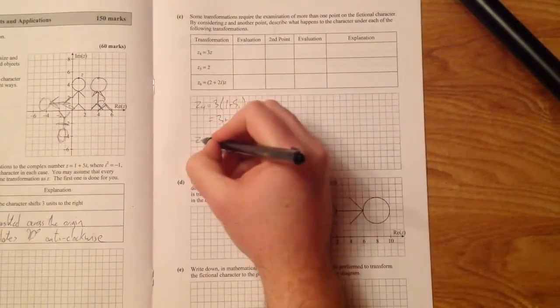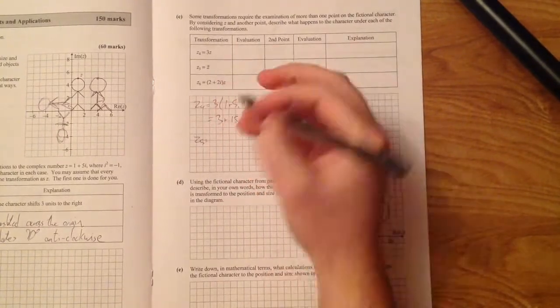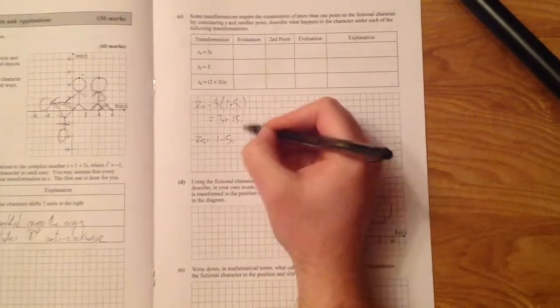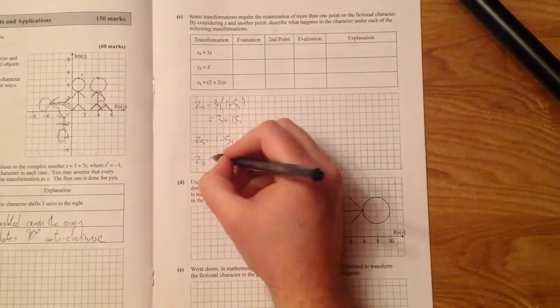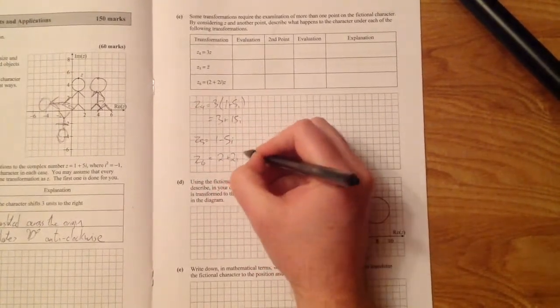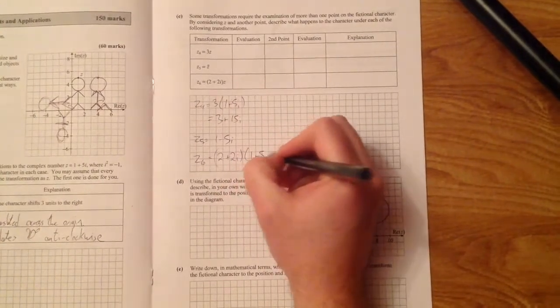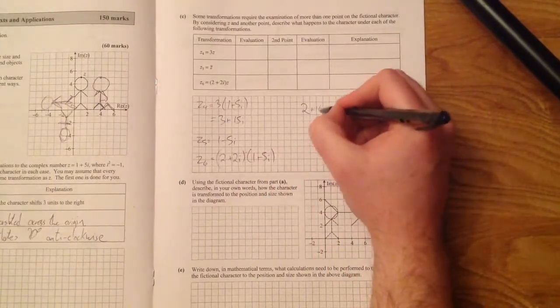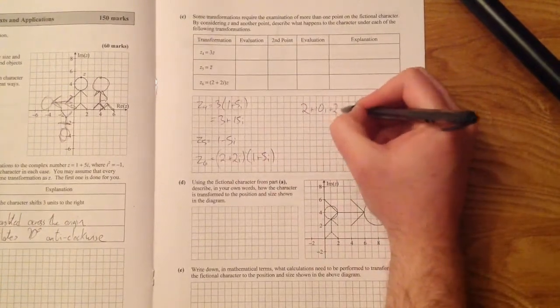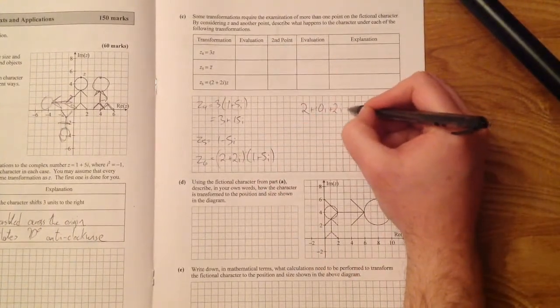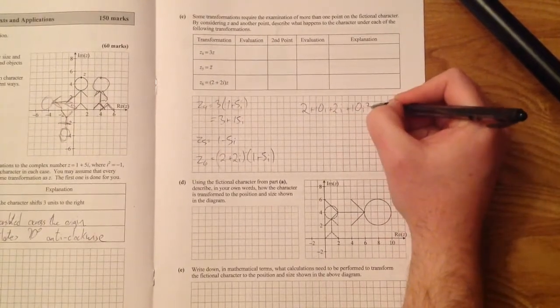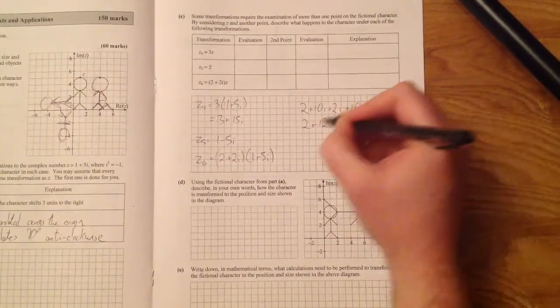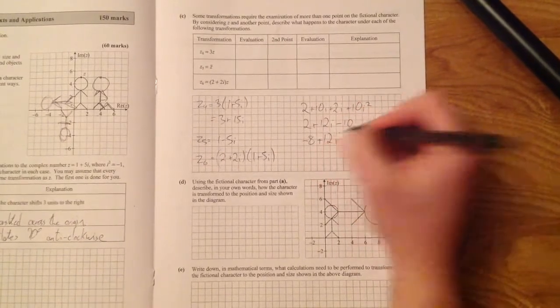Z5 equals the conjugate of z, which is where you change the sign of the imaginary number. So it's 1 minus 5i. That one's fairly straightforward. And z6 equals 2 plus 2i times z. So it's 2 plus 2i multiplied by 1 plus 5i. So 2 times 1 is 2. 2 times 5i is 10i. 2i times 1 is plus 2i. And 2i times 5i is going to be plus 10i squared. Now remember, i squared changes to minus 1. So you get 2 plus 12i minus 10. And you get minus 8 plus 12i.